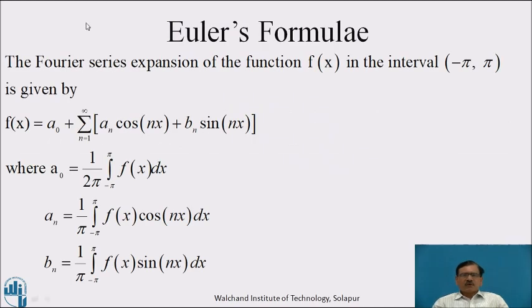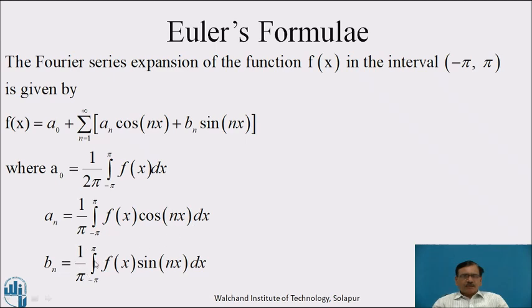First of all, we will see the Euler's formulae. The Fourier series expansion of the function f in the interval minus pi to pi is given by f equals a naught plus summation of n equal to 1 to infinity of aₙ cos(nx) plus bₙ sin(nx), where a naught equals 1 by 2π integration from minus pi to pi of f dx, aₙ equals 1 by π integration from minus pi to pi of f cos(nx) dx, and bₙ equals 1 by π integration from minus pi to pi of f sin(nx) dx.